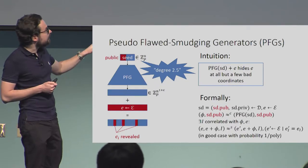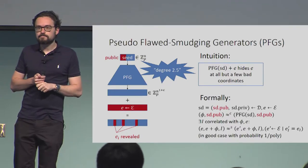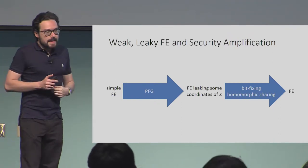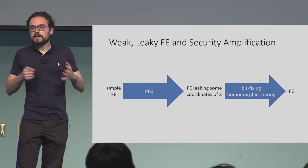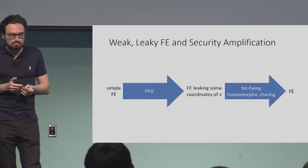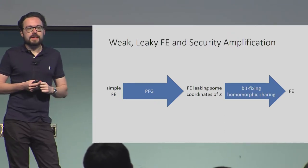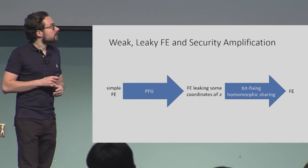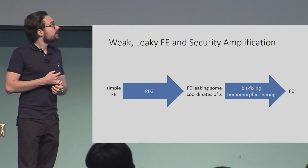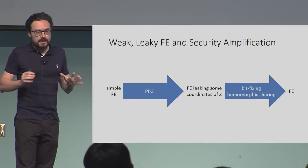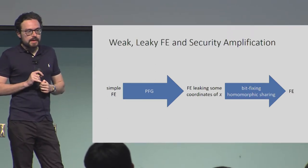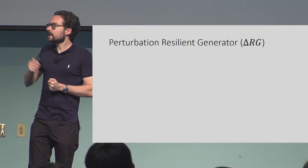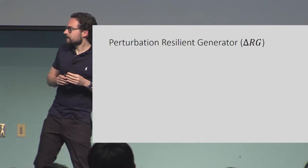Using this in our construction, we obtain an FE scheme that leaks the input x at some bad coordinates, but at other coordinates x is hidden. We then have to amplify this security to deal with this leakage. To do so, we introduce a new primitive — a special type of homomorphic secret sharing that we call bit-fixing homomorphic sharing — which allows us to share the inputs in a clever way to deal with this leakage. We'll now hand over to Ayush, who will tell you more about the assumptions and their construction.